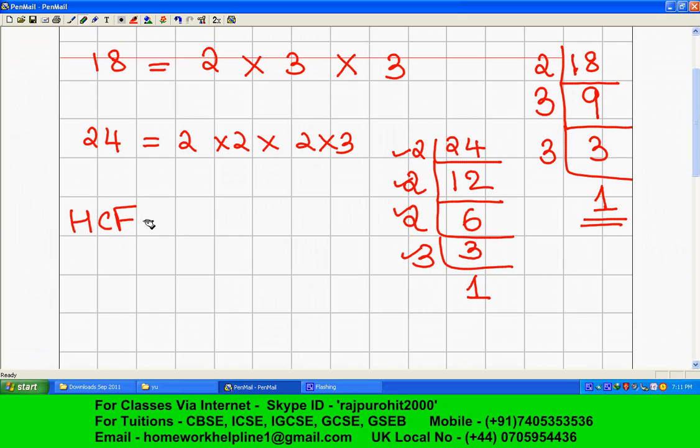Now your HCF will be the common numbers. First, 2 is there in both, so you write this.